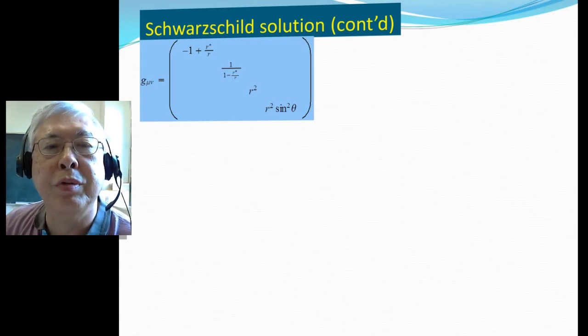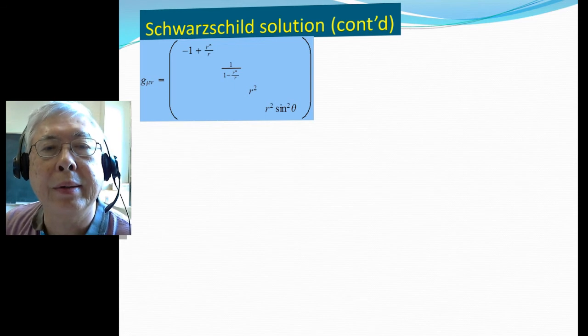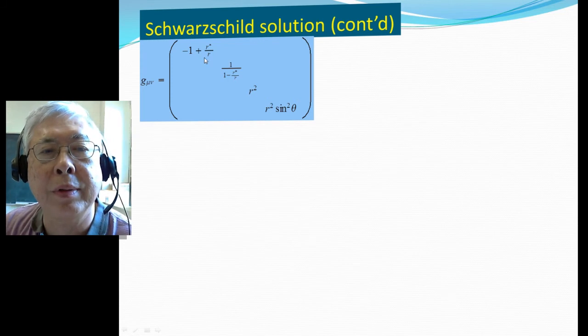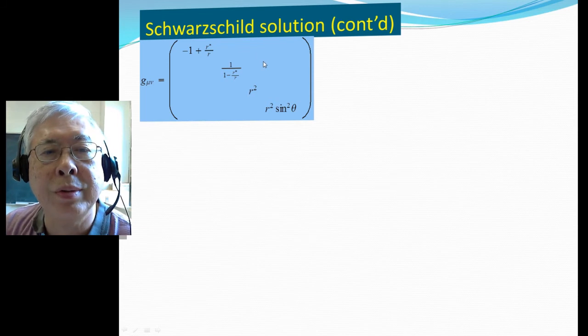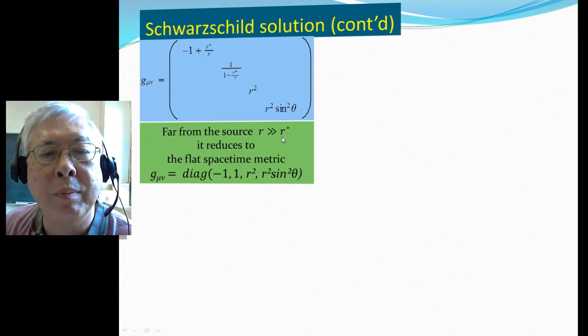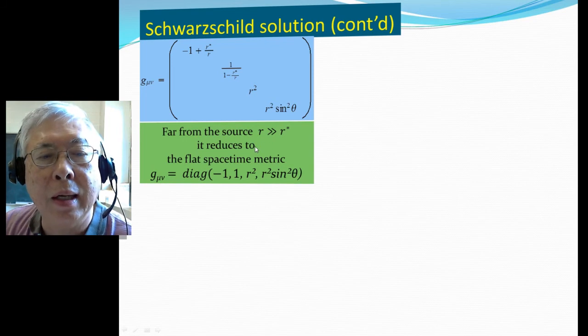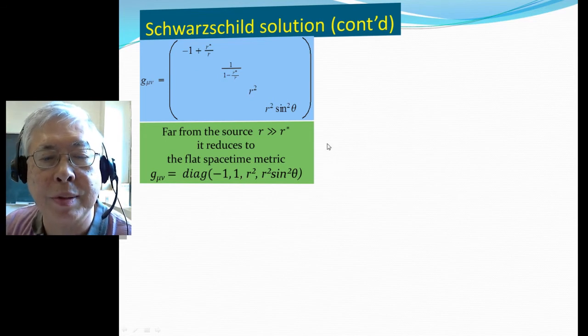We're going to continue to talk about Schwarzschild solutions. Last time we were talking about G00 and GRR, which can be found through solving the Einstein equation for an exterior of a spherical source. But far away from the source, which means r much greater than r star, it reduces to flat space. This term is zero, this term is minus one, so that's just the flat space metric.